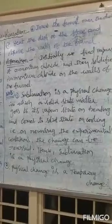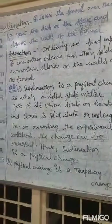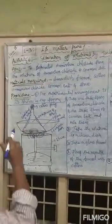Physical change is a temporary change. Now let us see the activity: Separation of Mixtures by Sublimation. Aim: to separate Ammonium Chloride from the mixture of Ammonium Chloride and Common Salt.